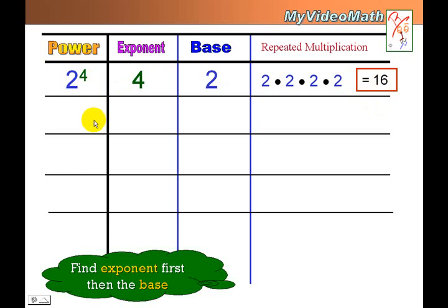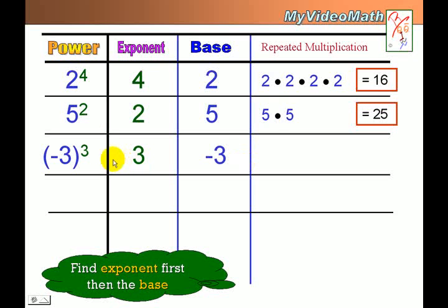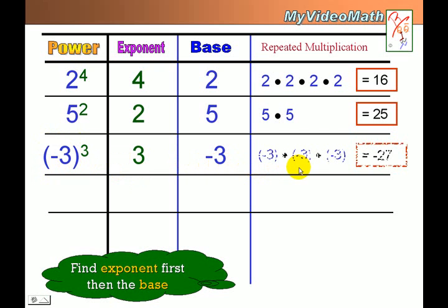Let's look at another example: 5 squared. The exponent is 2, the base is 5, and the repeated multiplication is 5 times 5, equal to 25. Now take a look at this one: the exponent is 3, but the base is inside a group symbol, so the entire group is the base. The entire group is negative 3, so the base is negative 3, and the factor form is negative 3 times negative 3 times negative 3, equal to negative 27.